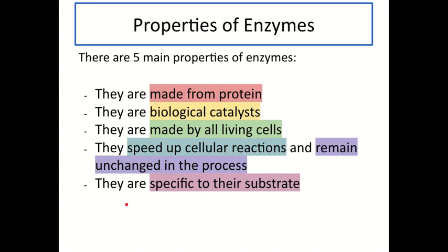The first thing you need to know about enzymes are their five main properties. First, enzymes are a type of protein, so they're made of amino acids. Secondly, the main function of enzymes is what we call being biological catalysts — they speed up chemical reactions within living things. This is really important, as without enzymes, living things would not be able to survive. The key chemical reactions in our bodies would not be able to take place at a quick enough pace without enzymes being there to speed them up. They are also made by all living cells.